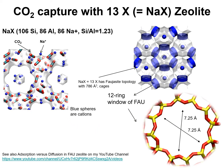One candidate adsorbent for CO2 capture from natural gas is 13X zeolite, which has the faujasite topology. This topology consists of cages of 786 cubic Angstrom. Each cage is separated from adjacent cages by 12-ring windows that have an aperture of 7.25 Angstrom. CO2 interacts strongly with the extra framework cations; per unit cell of 13X zeolite we have 86 sodium cations, 86 aluminum atoms, and 106 silicon atoms with a silicon to aluminum ratio of 1.2.